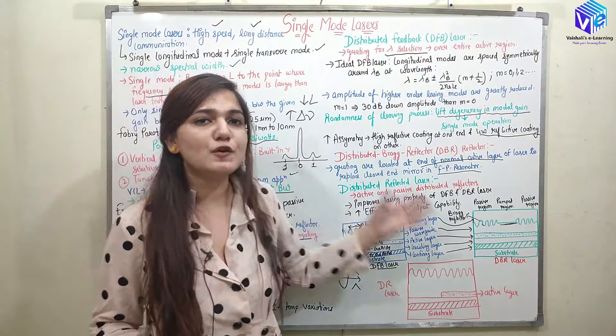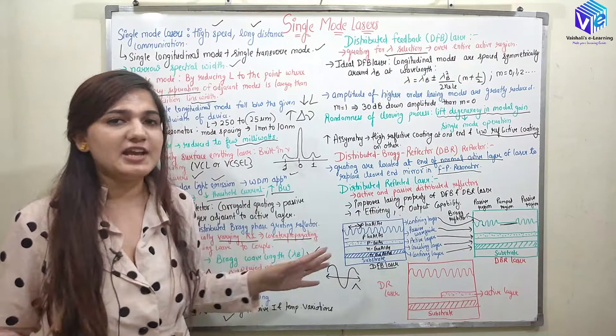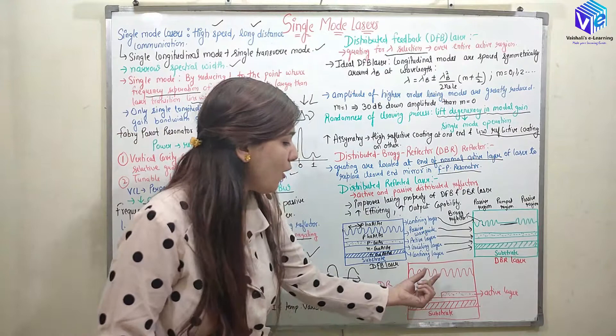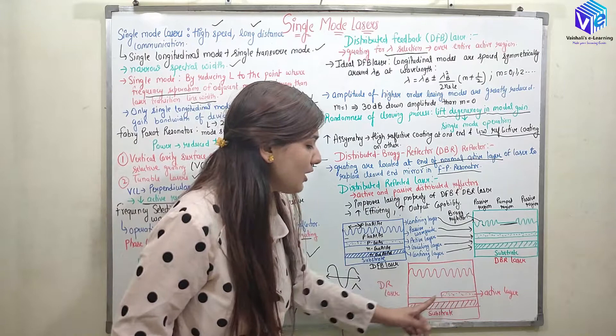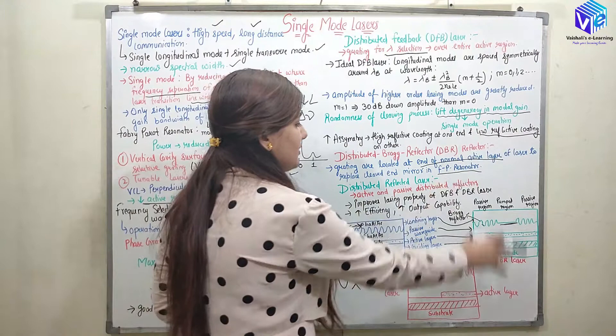The distributed reflected laser is better than both DFB and DBR. It improves efficiency and output capability. The active region is present only over a limited section. It combines the lasing properties of both DFB and DBR — we can have full grating or grating only in the passive region, with a small area active layer and both active and passive distributed reflectors.